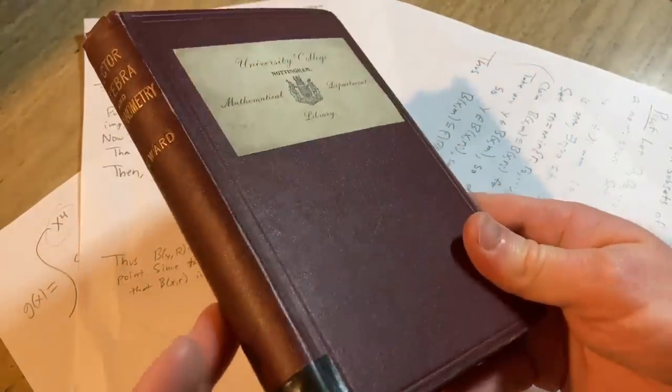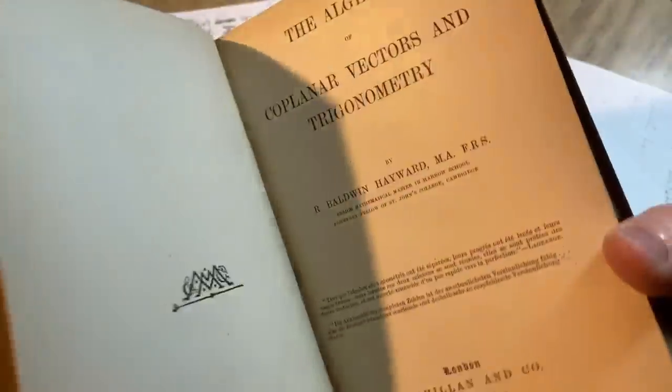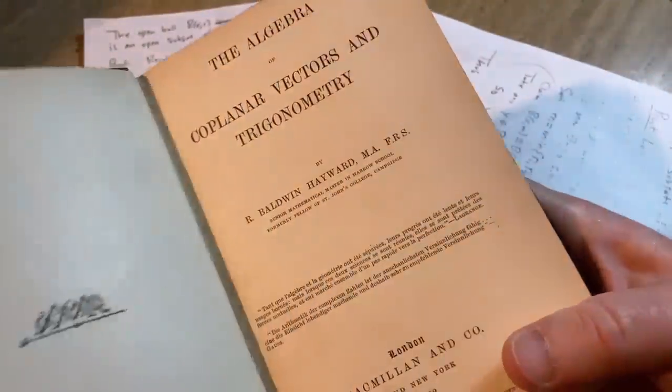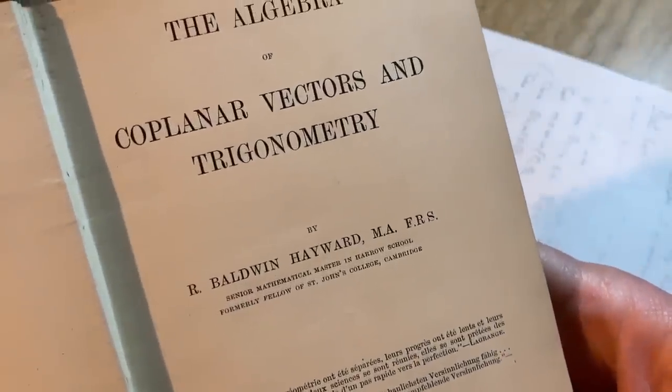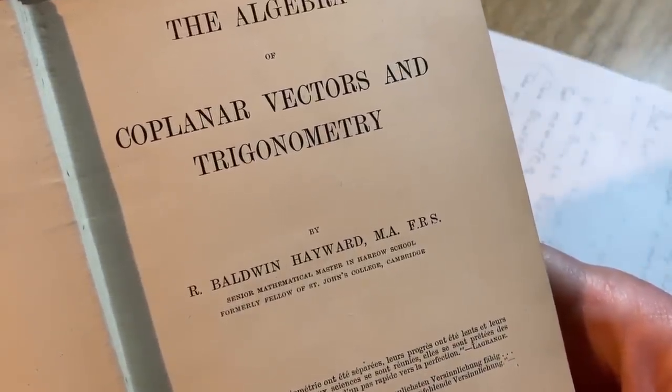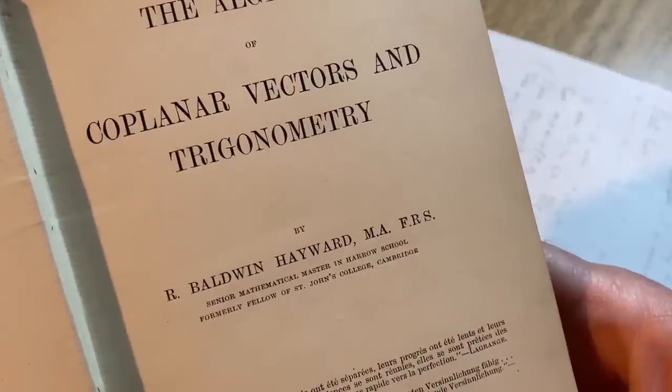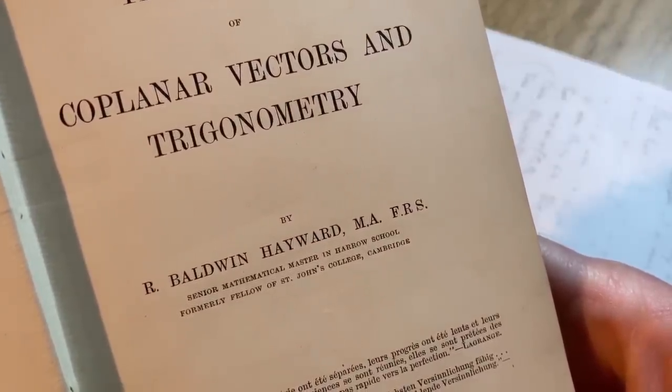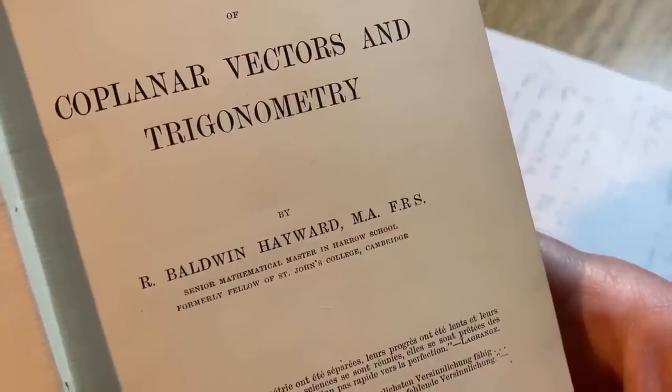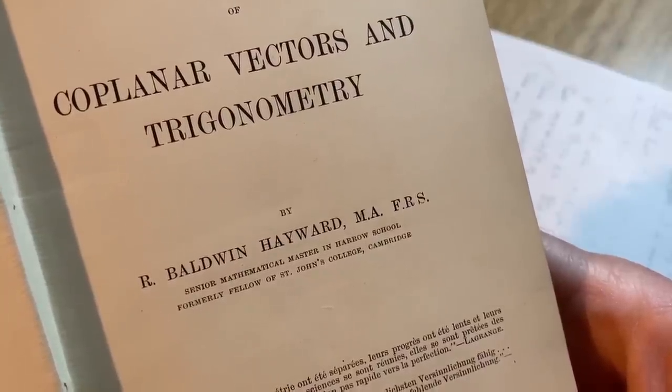This is an ex-library book, so it has been withdrawn. When I first saw it I thought oh no. So I'm wondering, did you have the same feeling? Did you think hey that's an overdue library book? I didn't notice it until I opened it up further. Look, 1892. The Algebra of Coplanar Vectors and Trigonometry by Richard Baldwin Hayward, MA FRS, Senior Mathematical Master in Harrow School, Formerly Fellow of St John's College Cambridge.